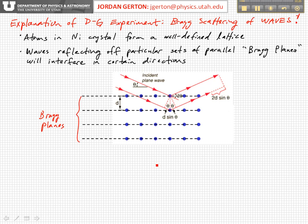What the Bragg formalism does is that you think about a crystal — in this particular case a nickel crystal. The atoms within a nickel crystal form a well-defined lattice. I'm showing a two-dimensional cut of a crystal, very schematically, so that atoms are in very particular locations with respect to each other.